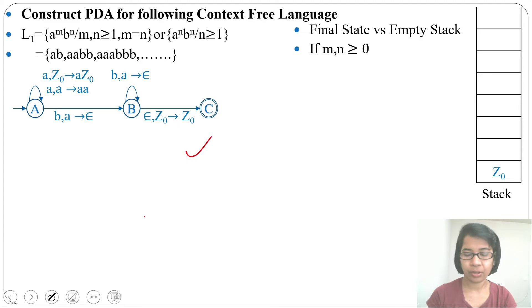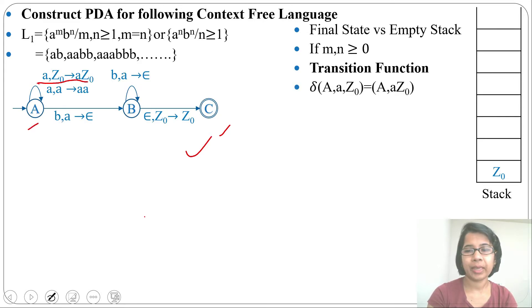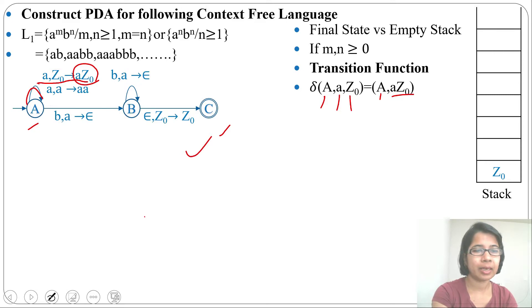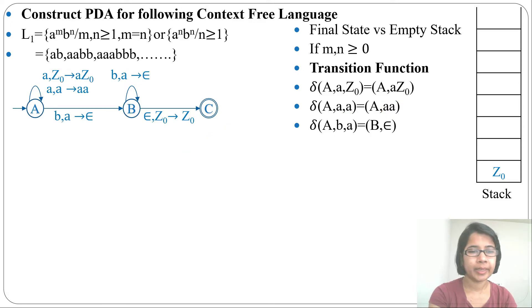Let me write the same PDA in transition function notation. For the first 'a' with Z0 on top: δ(a, a, Z0) = (a, aZ0) — state 'a', input 'a', topmost Z0, go to state 'a' and push 'a' above Z0. Next: δ(a, a, a) = (a, aa) — state 'a', input 'a', topmost 'a', go to state 'a' and push 'a' above 'a'.